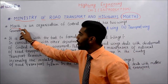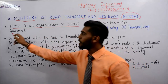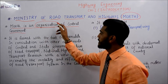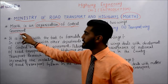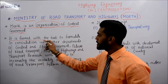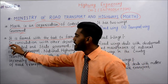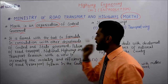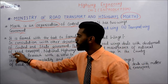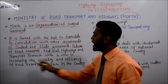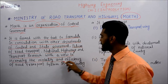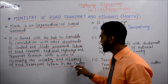MORTH is an organization of Central Government. यानि कि जो MORTH है वो एक organization है Central Government की. It is formed with the task to formulate, in consultation with other departments of central and state government, policies of road transport, national highways, and transport research with a view to increase the mobility and efficiency of road transport system in the country.